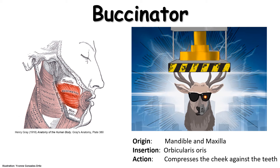Here, I'm specifically showing the mandible and the maxilla — the upper and lower jaw made of metal — to help you remember that is the origin of the muscle. That's where it starts. So the origin is the mandible and the maxilla of the buccinator, the buck terminator.